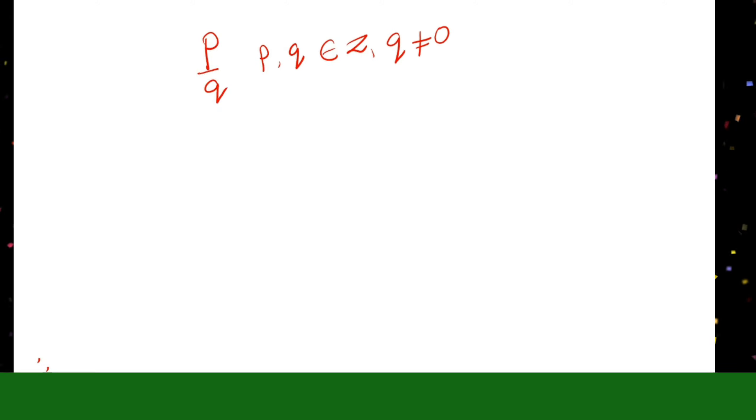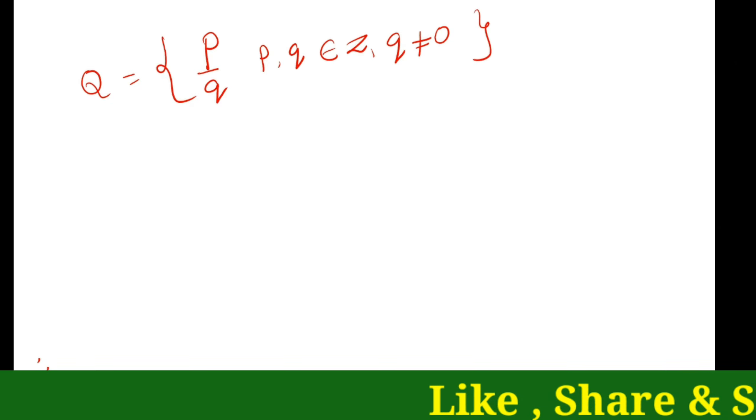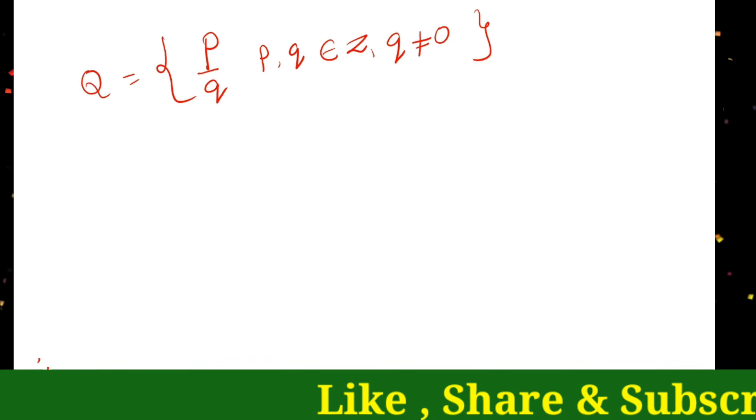Before this class we learned rational numbers. What is a rational number? A number that can be expressed in the form of p by q, where p and q are integers and q is not equal to 0. This type of numbers are called rational numbers.